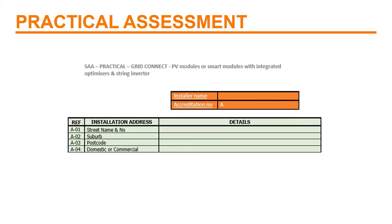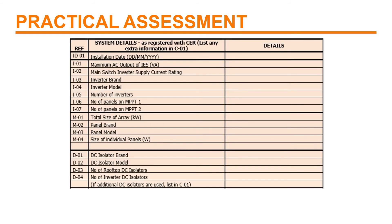Once you fill in your details and the customer's details, you have two parts to complete. We need to see the details of the inverter, the panels and the DC isolator that you have installed. The model numbers need to be exact, as shown on the name plates of the products you are installing.